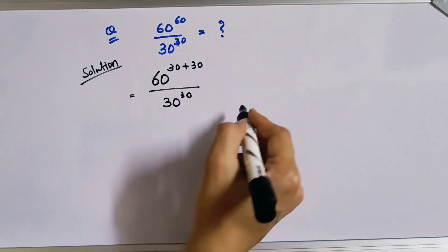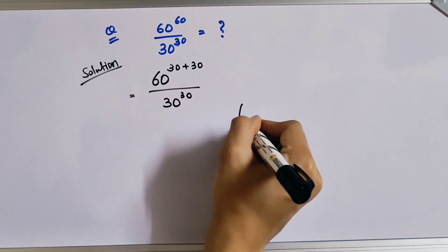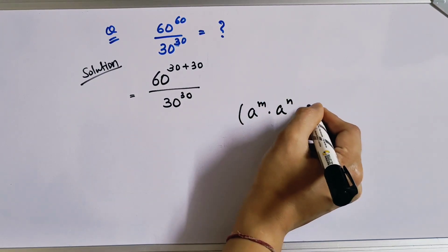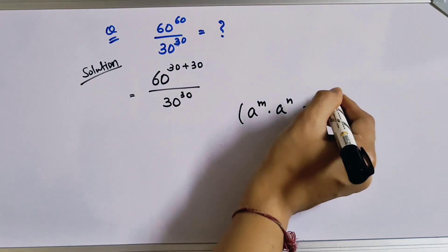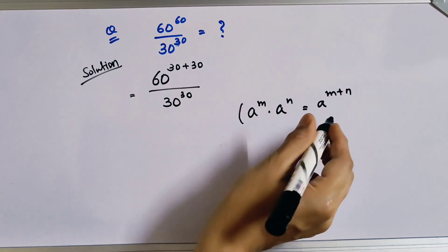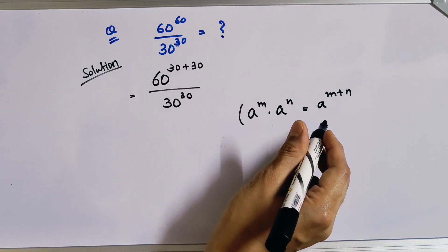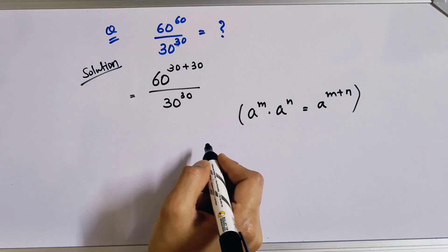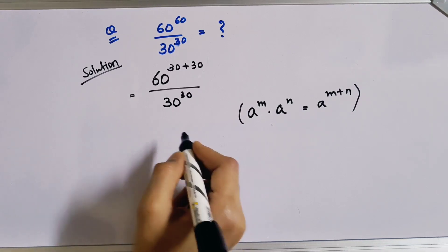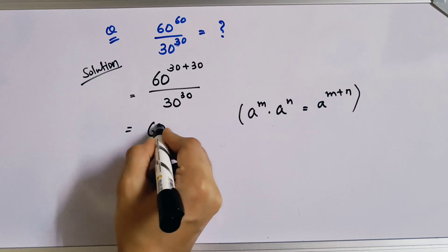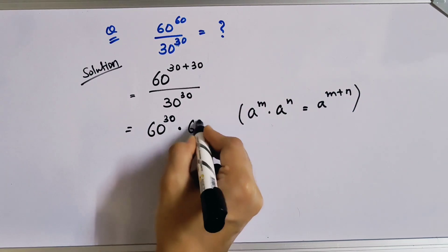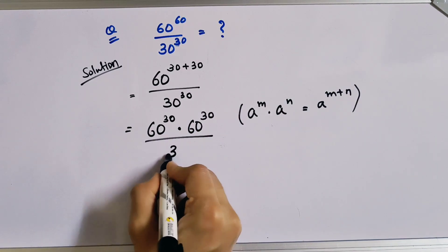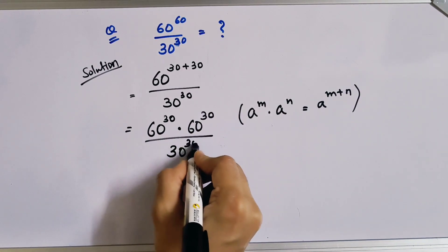Now, as per the rule a to the power m multiplied by a to the power n equals a to the power m plus n, we will write here 60 to the power 30 multiplied by 60 to the power 30, whole divided by 30 to the power 30.